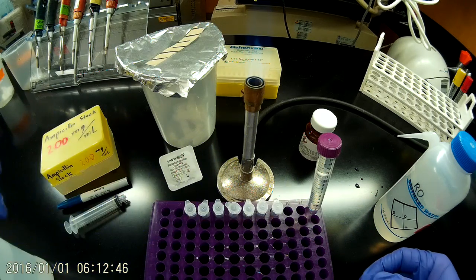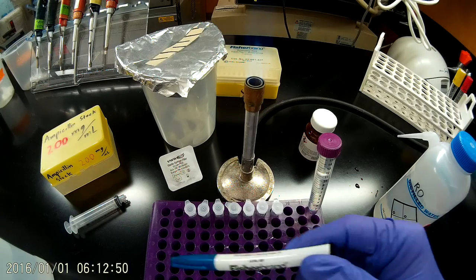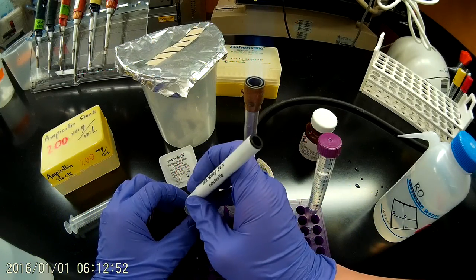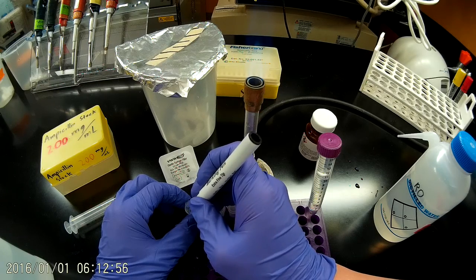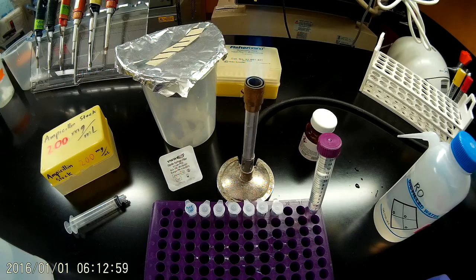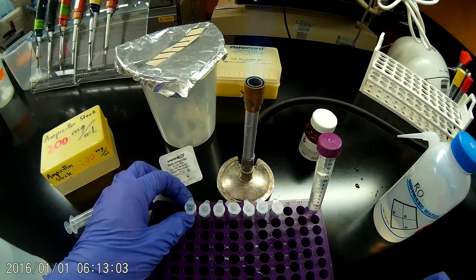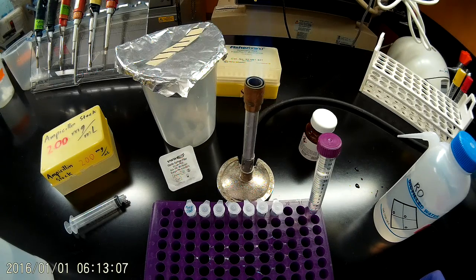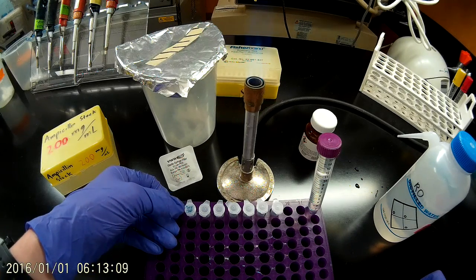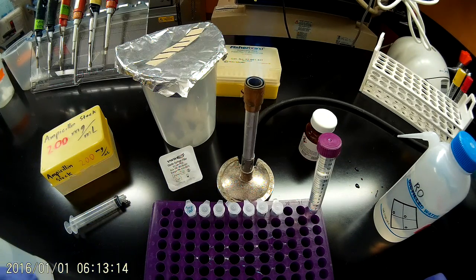When I'm finished, I'm actually going to go ahead and label all of these AMP 200. You'll actually see this notation on many of the stock solution tubes in the labs. You'll see AMP 200, AMP 100, TET 5, CAM 35, etc. This means ampicillin 200 milligrams per milliliter. We just leave off the units for brevity, but if you see that around the lab, that's what that means.